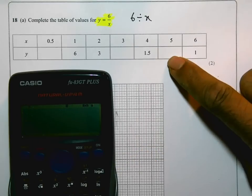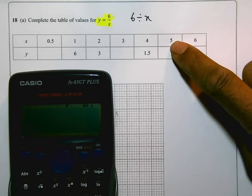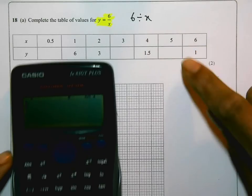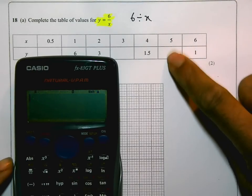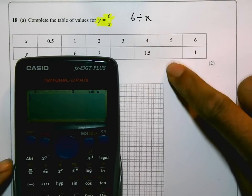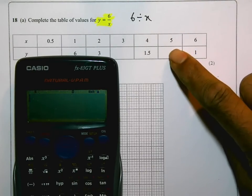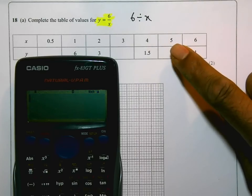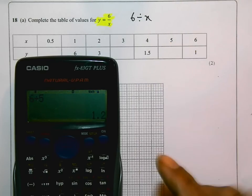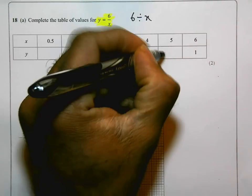So for each of these, to work out the y value, I need to divide the x value by 6. So for the first one, this first empty space, I'm going to start from this side. When x is 5, I'm going to do 6 divided by 5. That's 1.2. So I'm going to write that in. 1.2.